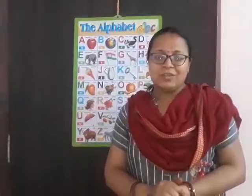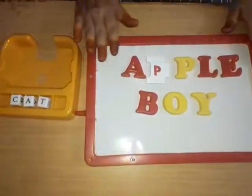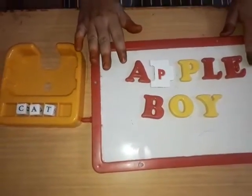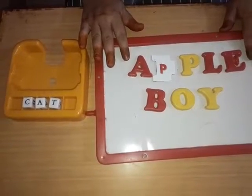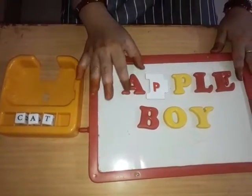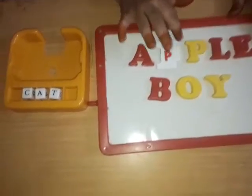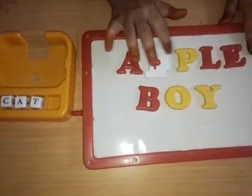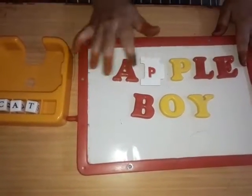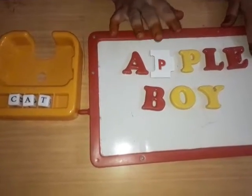First, look at the table. Do you know? A for apple. So this is A, double P, L, E — apple. A for apple.